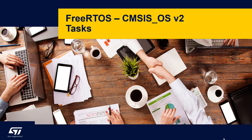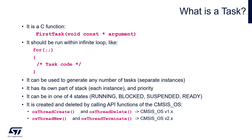FreeRTOS tasks. What is a task? It is a C function. It should be run within an infinite loop, like we see on screen — similar to a while-one loop from the main.c file's main function. This function can be used to generate any number of tasks, so separate instances.